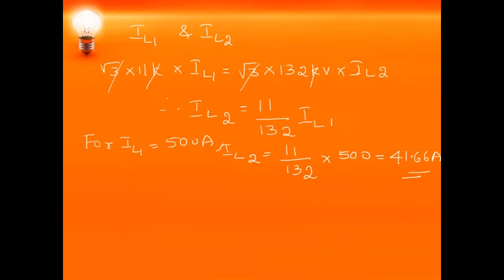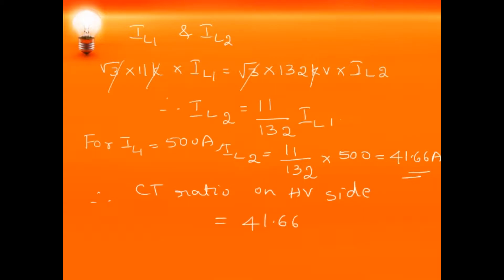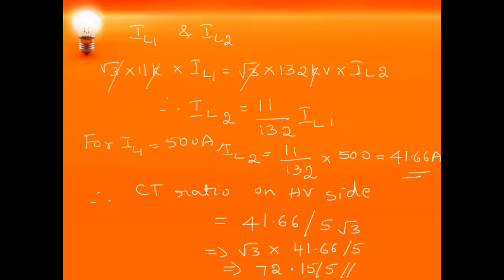Since the CTs on the LV side are connected in star, the current through the secondary of the CT and the pilot wire is 5 amps. The CTs on the HV side, connected in delta, will have a current of 5/√3 amperes in the secondary. Therefore the CT ratio on the HV side is 41.66 / (5/√3) = 72.15/5.